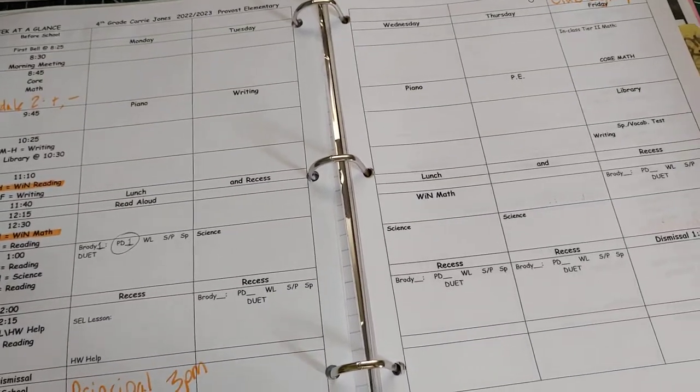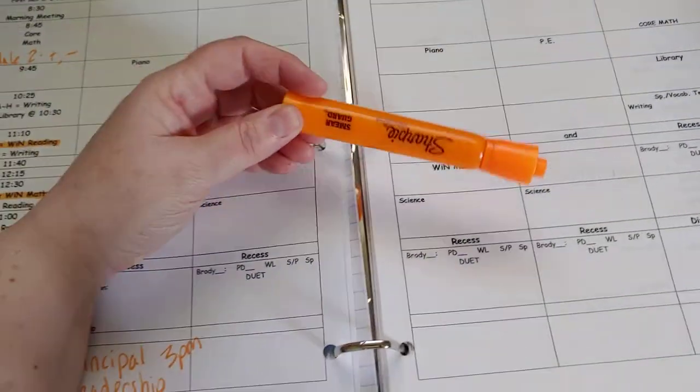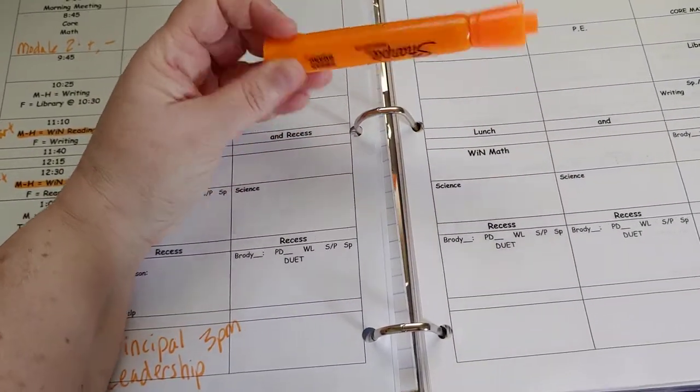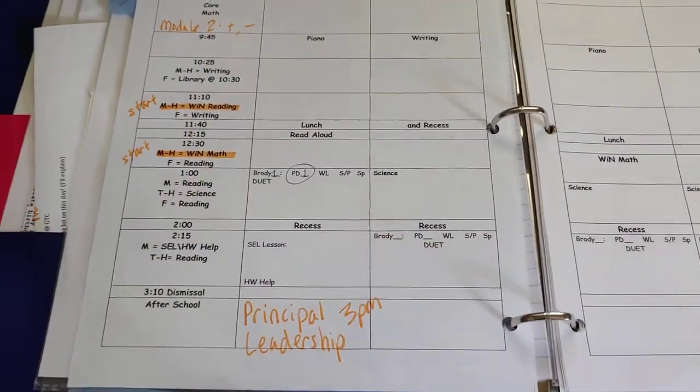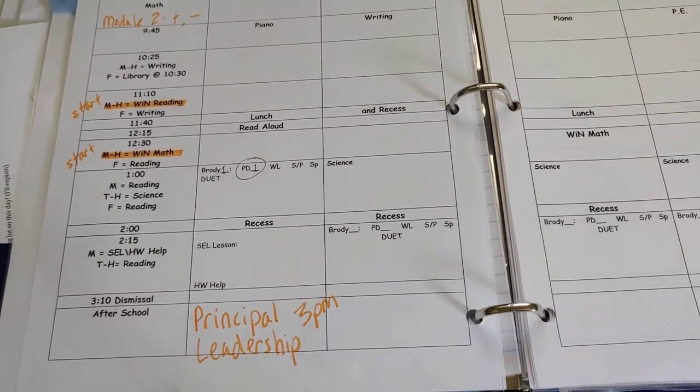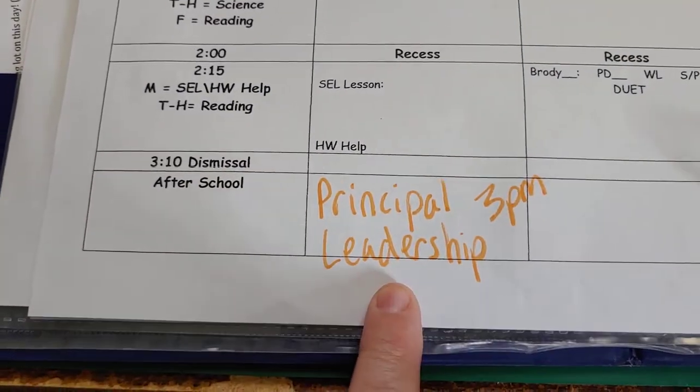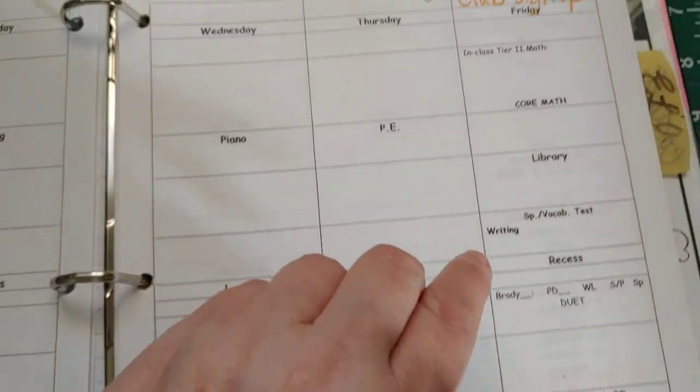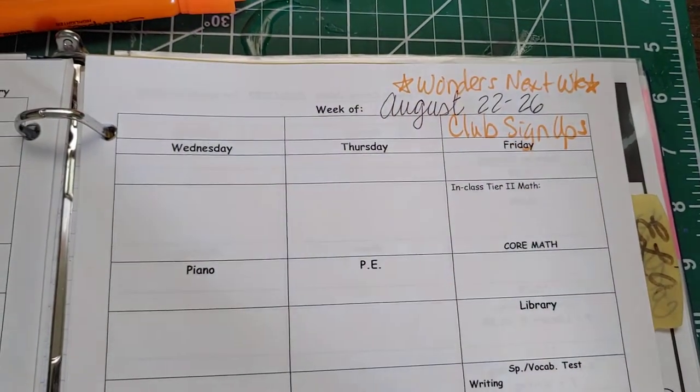I like to have a week at a glance, so after I print that at school then I start going through with a highlighter. I use that because it's bright and colorful but it tends to not bleed through to the next page, and I start marking things.